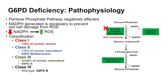Class 4 is considered wild type — these are normal individuals with the wild-type allele glucose-6-phosphate dehydrogenase B. There is also a class 5, which is interesting in that these individuals actually have increased activity of glucose-6-phosphate dehydrogenase — about 2 times the normal activity — and there doesn't seem to be any clinical issue with these individuals at all.